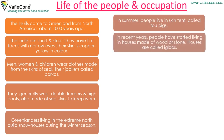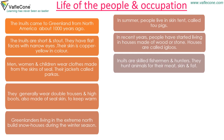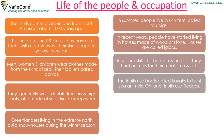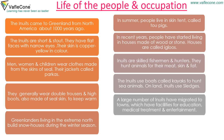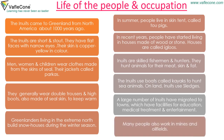In recent years, people have started living in houses made of wood or stone. Houses are called igloos. Inuits are skilled fishermen and hunters. They hunt animals for their meat, skin, and fat. The Inuits use boats called kayaks to hunt sea animals. On land, Inuits use sledges. A large number of Inuits have migrated to towns which have facilities for education, medical treatment, and entertainment. Many people also work in mines and oil fields.